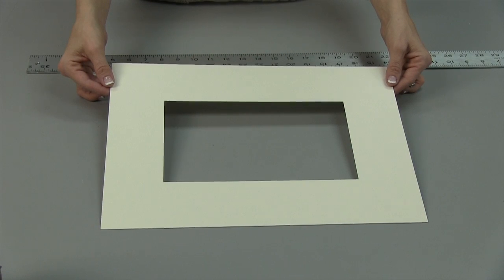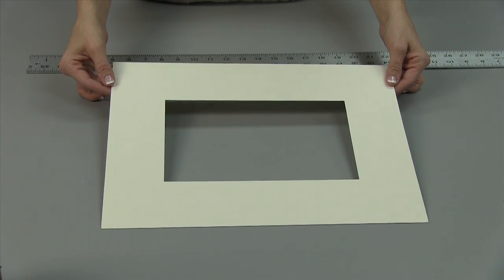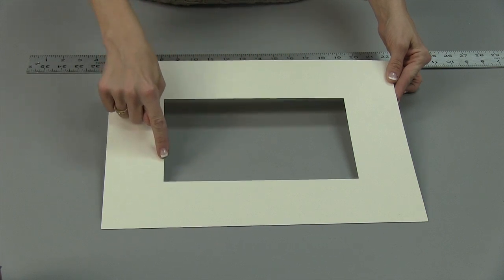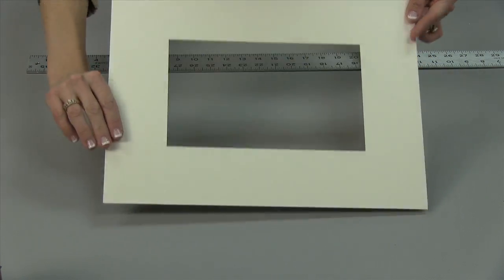To cut and fit a fillet inside a mat opening, we must first prep the materials. Cut the mat opening with a reverse bevel to ensure the fillet fits tightly into the opening.